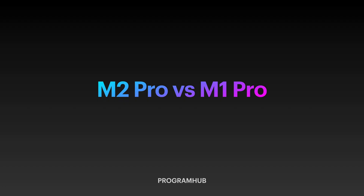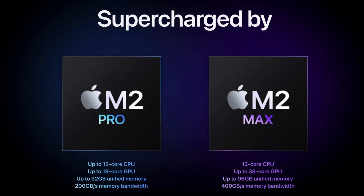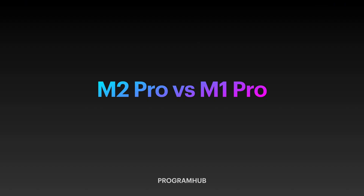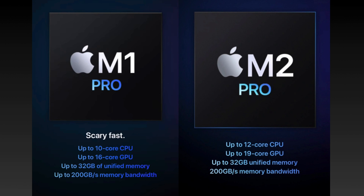Today we'll be looking at what is the difference between the M2 Pro and the M1 Pro processors, especially if you're looking to buy any of the newly refreshed MacBook models. The first difference that stands out is that we have two extra cores in the CPU in the M2 Pro versus the M1 Pro. In the M1 Pro we had a 10-core CPU, and now in the M2 Pro we have a 12-core CPU.